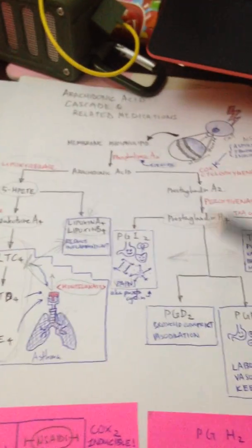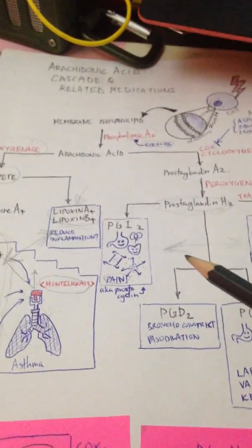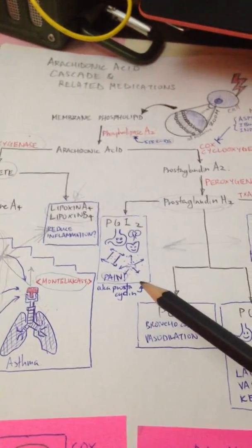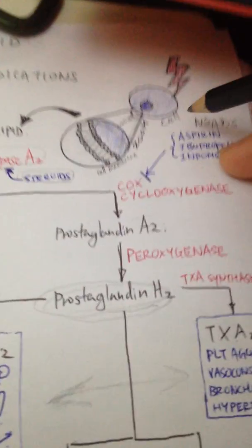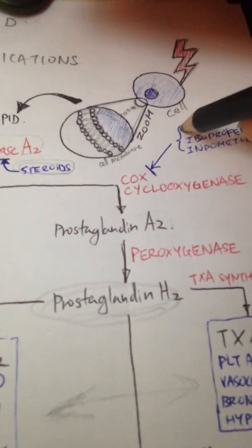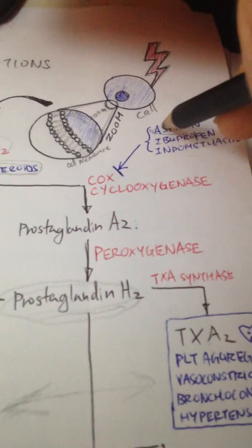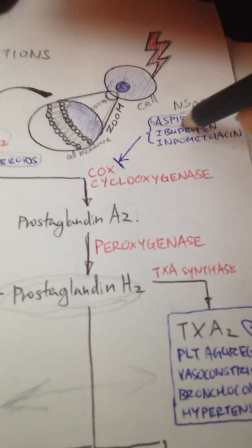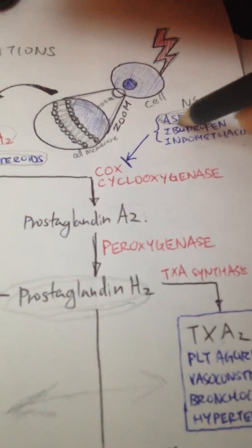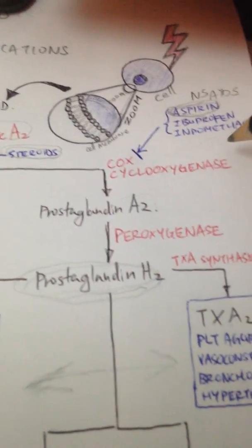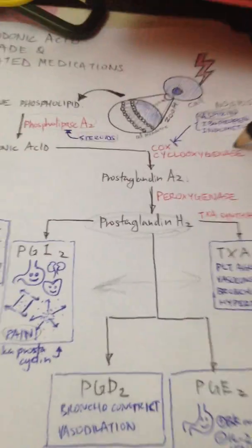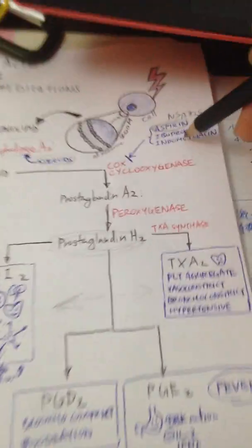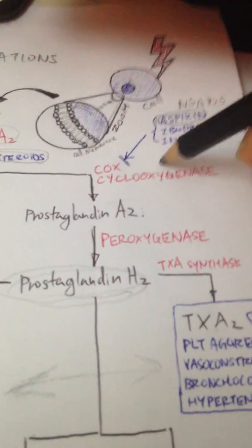Since we've covered the whole arachidonic acid cascade, now I'm going to talk a bit about how some drugs like aspirin are not recommended to be taken by asthmatics. Some people are very sensitive to aspirin and can actually have asthmatic attacks from taking aspirin. Why does that happen?